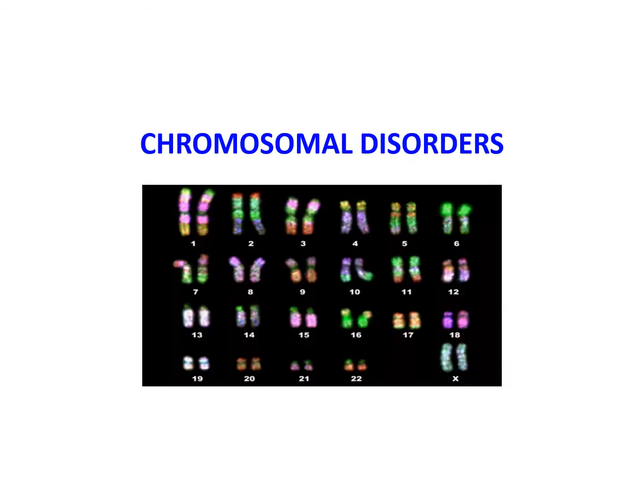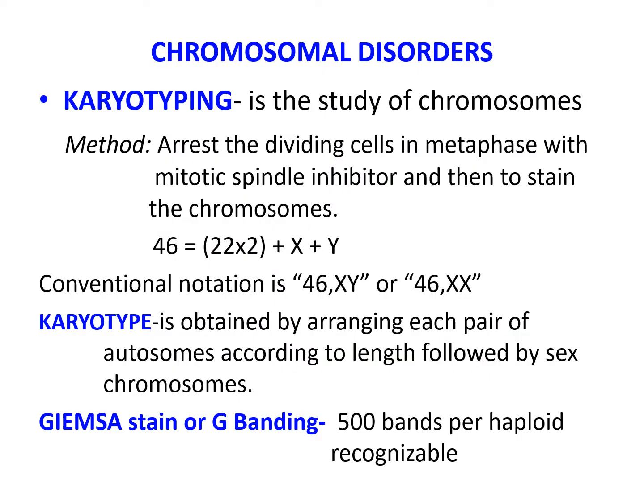Our first topic is chromosomal disorders. The human somatic cells contain 46 chromosomes: 22 homologous pairs of autosomes and 2 sex chromosomes, XX in the female and XY in the male. The study of chromosomes is called karyotyping and is the basic tool in cytogenetic studies. The usual procedure is to arrest the dividing cells in metaphase with a mitotic spindle inhibitor, such as N-diacetyl N-methylcolchicine, and then to stain the chromosomes.